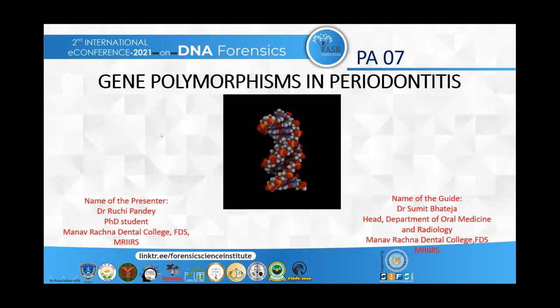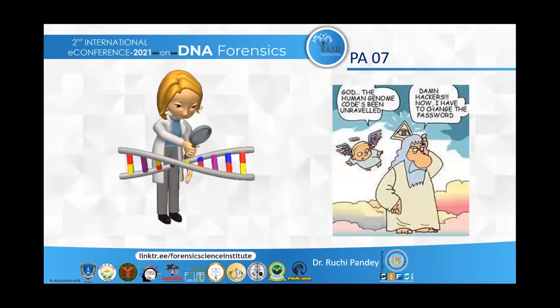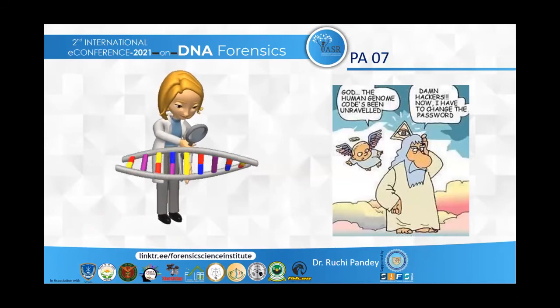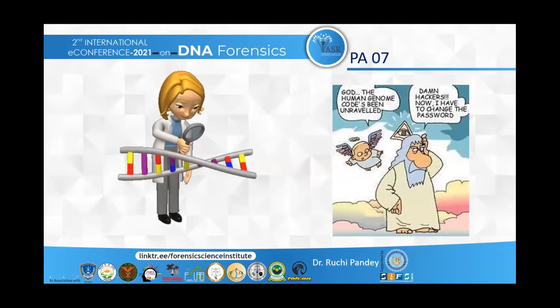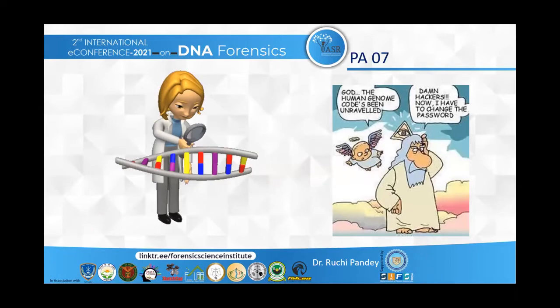My topic for the day is gene polymorphisms in periodontitis. As we all know, around 20 years back the human genome project had started and the entire human genome was decoded in the year 2003. But still there are a lot of single nucleotide polymorphisms and mutations that do happen, and ultimately the human genome keeps changing. We need to decode it every time to find out where the single nucleotide polymorphisms are happening in different races and how any disease is being linked to these polymorphisms.